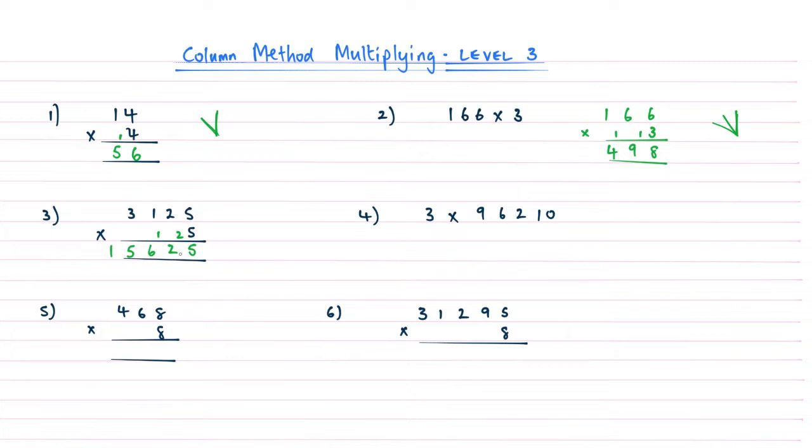Now with question number 4, what you realize now is that the numbers are the other way around. So the single digit is at the beginning of this calculation. So all we do, we just make sure that we need to write the big number on top. So 96,210, write your little single digit underneath, two lines, and making sure that we're going to follow that pattern.